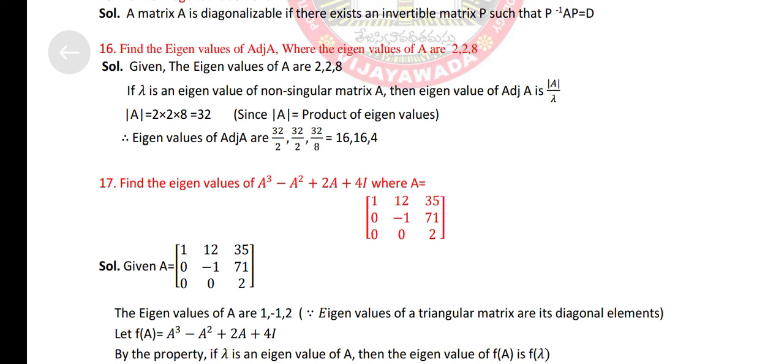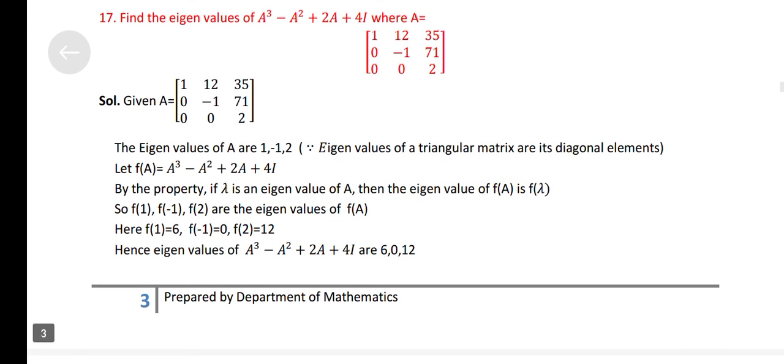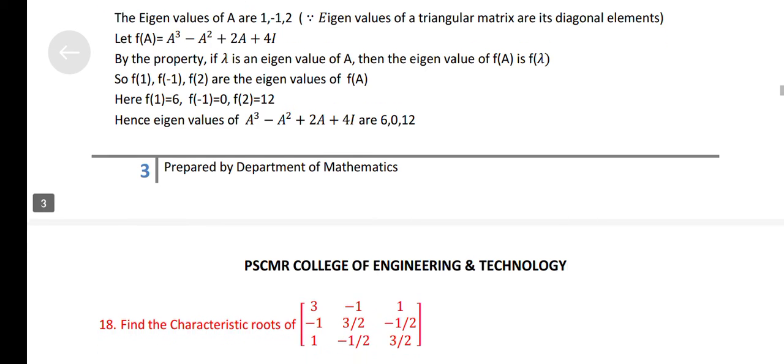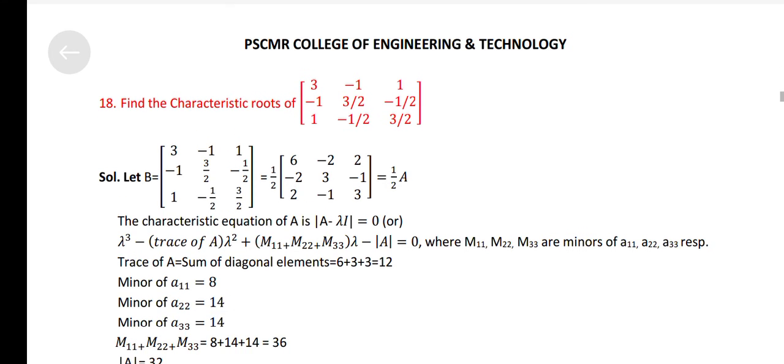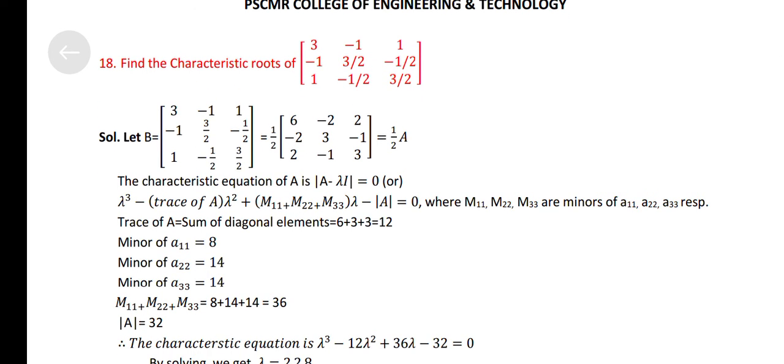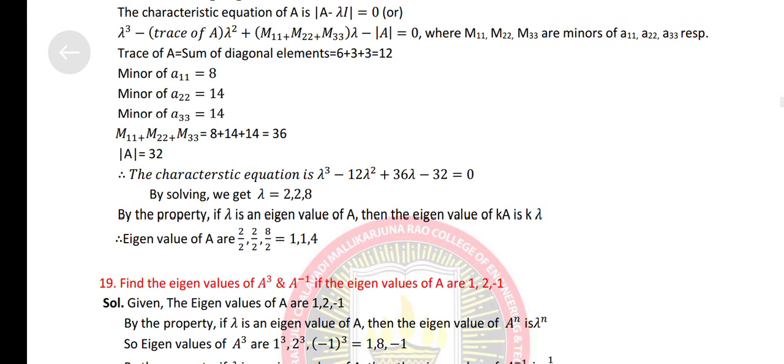Find the eigenvalues of A square plus 2A plus 4I where A is equal to. Find the characteristics root of. Find the eigenvalues of A cube and A inverse if the eigenvalues of A are 1, 2, minus 1.